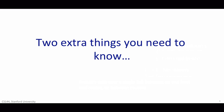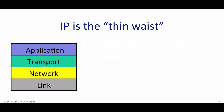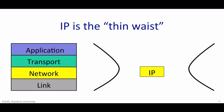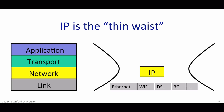There are two extra things to know. The first is that IP is often referred to as the thin waist of the Internet. This is because if we want to use the Internet, we have to use the Internet Protocol — we have no choice. But we have lots of choices for link layers. IP runs over many different link layers such as Ethernet, Wi-Fi, DSL, 3G cellular, and so on. And on top of the IP layer, we can choose between many different transport layers. We already heard about TCP and UDP. There's also RTP for real-time data and many others too. And of course, there are tens of thousands of different applications sitting on top.